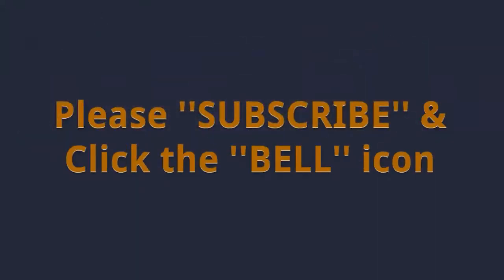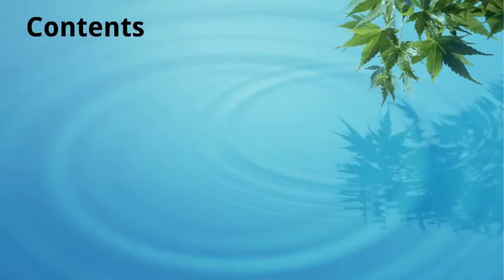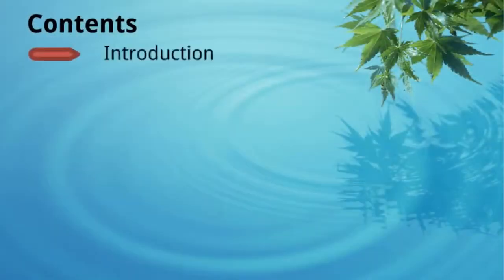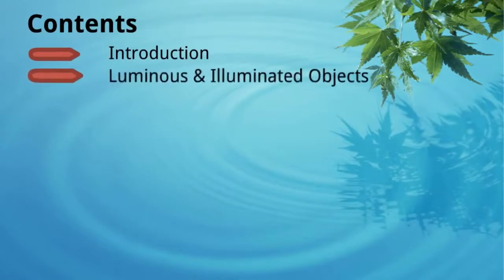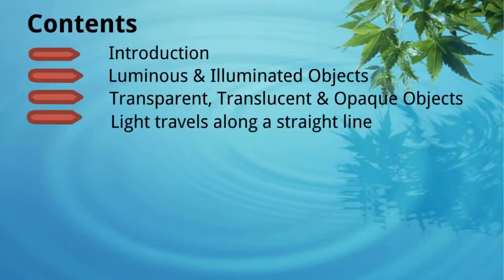Please subscribe to my YouTube channel and don't forget to click the bell icon. Introduction to light, shadows, and reflection is divided into few parts: introduction, luminous and illuminated objects, transparent, translucent, and opaque objects, light travels along a straight line, reflection of light, and plane mirrors.